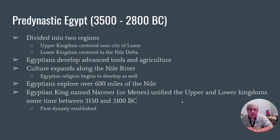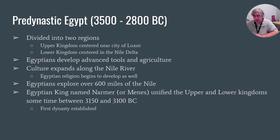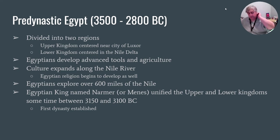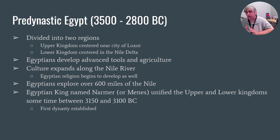When you look at ancient Egypt, you break it down into a couple of different things: the pre-dynastic period, the Old Kingdom, the Middle Kingdom, the New Kingdom, and then modern times as well. Our dates are just going to be estimations for this class — the dates are good enough.